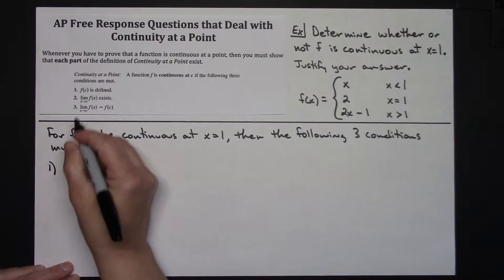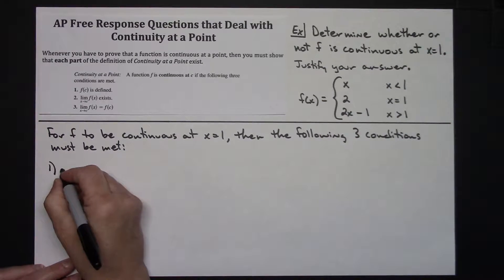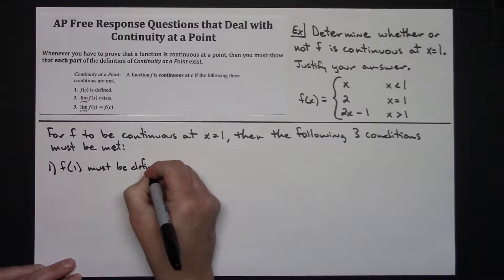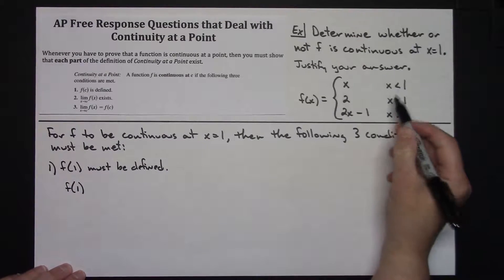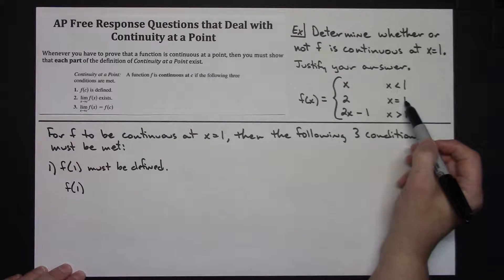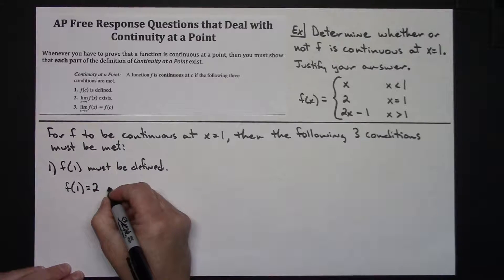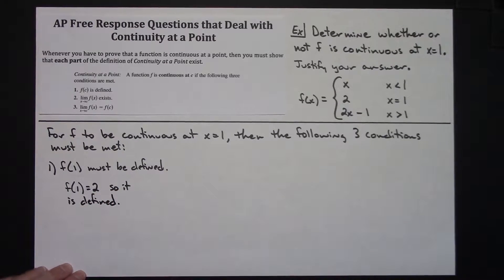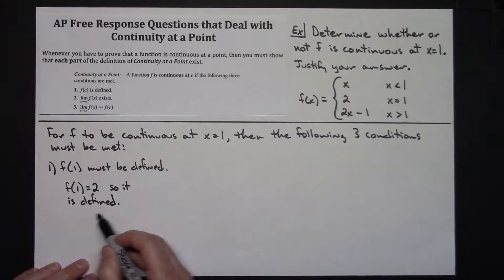The first thing to consider is the first part: f of c is defined. Since my c is one, I have to show that f of one must be defined. So I'm going to plug it in and see what I get. At x equals one, the function is two. So f of one equals two — it is defined. That would be a good enough part written out. The first condition is met.